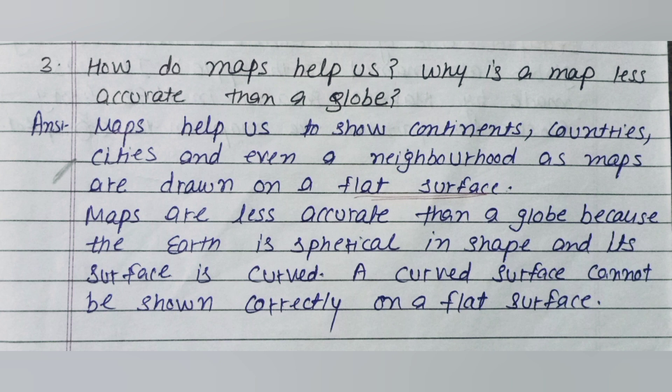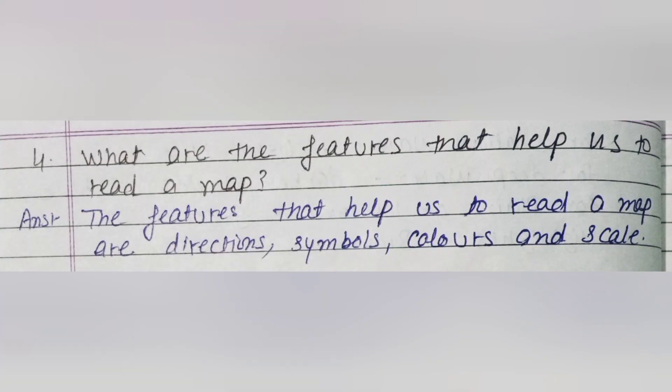Question number three: How do maps help us? Why is a map less accurate than a globe? Answer: Maps help us to show continents, countries, cities, and even a neighborhood. As maps are drawn on a flat surface, maps are less accurate than a globe because the earth is spherical in shape and its surface is curved. A curved surface cannot be shown correctly on a flat surface.